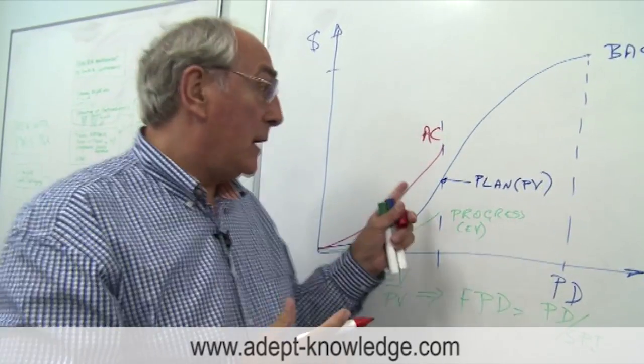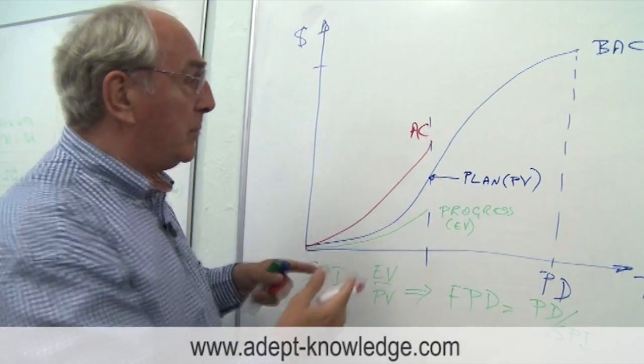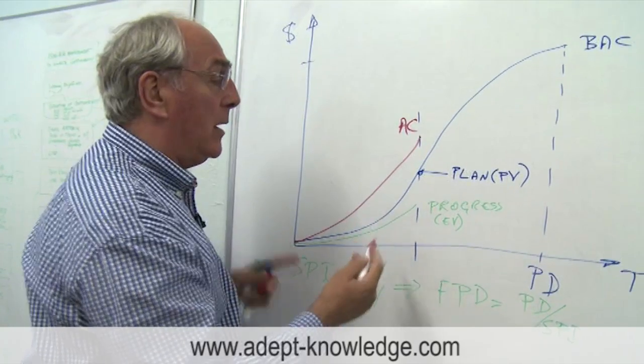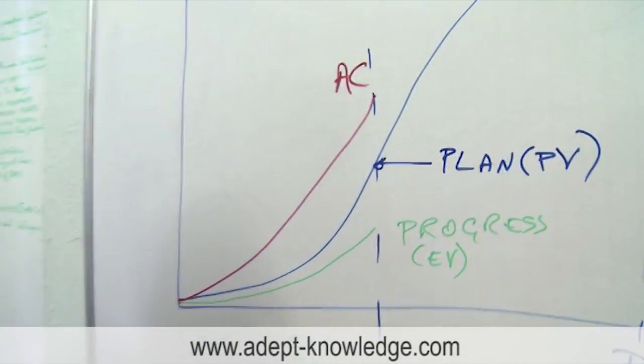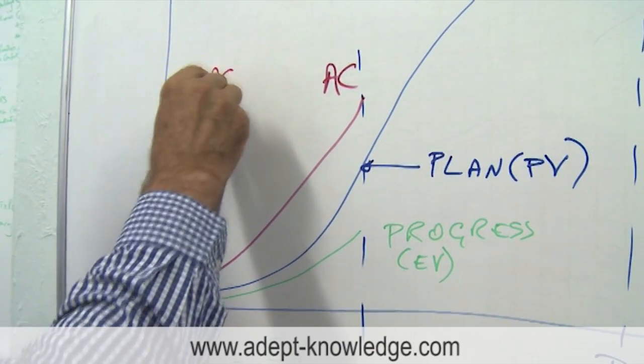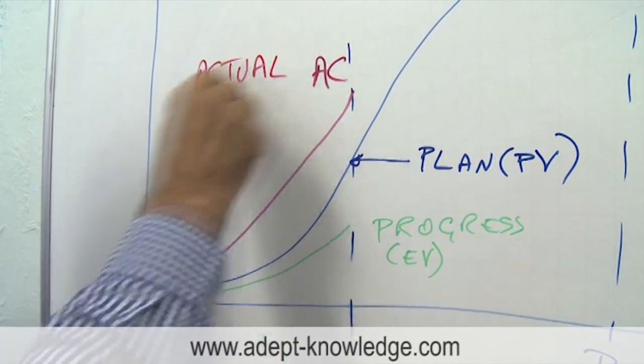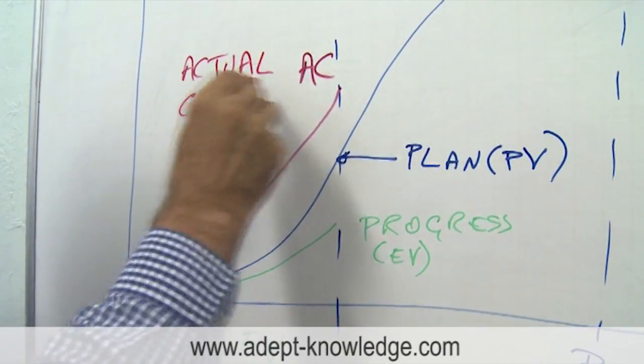This is showing the actual cost of that project and it shows that we're spending more money than we plan to spend and also more money than the value that we plan to get out of that. So that's our actual cost and it's known as AC.